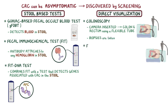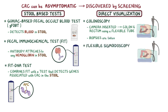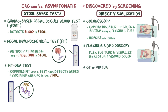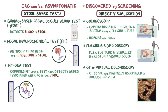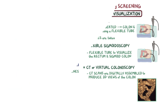Another direct visualization test is a flexible sigmoidoscopy, which uses a flexible tube to visualize the rectum and sigmoid colon. Finally, there's CT colonography, or a virtual colonoscopy, where CT scans are digitally assembled to produce three-dimensional views of the colon. If a suspicious lesion is seen on a direct visualization test, it should be further investigated using colonoscopy and biopsy.